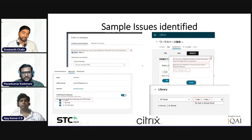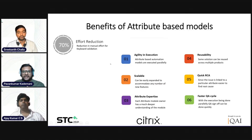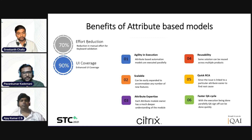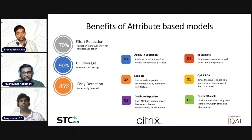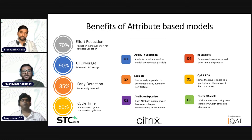With the attribute-based model, here are the benefits we achieved. For keyboard layout testing, we reduced around 70 percent of the manual effort needed in keyboard validation using our keyboard attribute automation. For all the products targeted, we achieved around 90 percent UI coverage, and around 85 percent of bugs were detected early in the cycle. Since each bug is associated with a particular attribute, the root cause analysis is quite straightforward. With all these solutions in place, the overall cycle time is reduced by around 50 percent. The attribute-based model brings agility in execution and the solution is scalable to be used across multiple products and on different platforms.